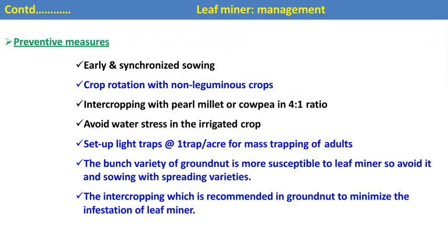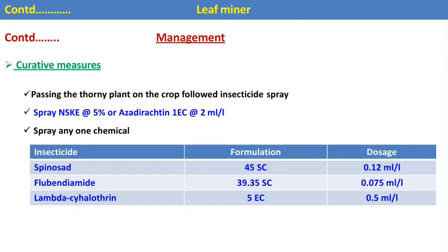Management of leafminer in groundnut includes: early and synchronized sowing; crop rotation with non-host or non-leguminous crops; intercropping with pearl millet or cowpea; avoid water stress in irrigated crops; use light traps at one trap per acre for mass trapping adults. The bunching variety of groundnut is more susceptible to leafminer, so use spreading varieties instead. Botanical insecticides include NSKE 5% and azadirachtin. Recommended chemical insecticides are spinosad, flubendiamide, and lambda-cyhalothrin against leafminer.